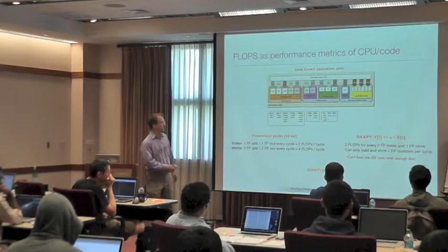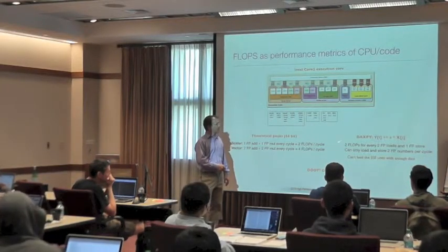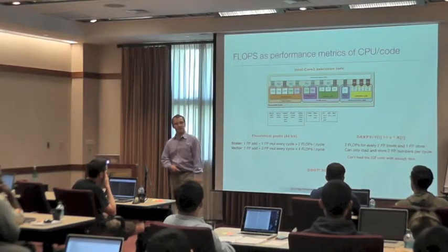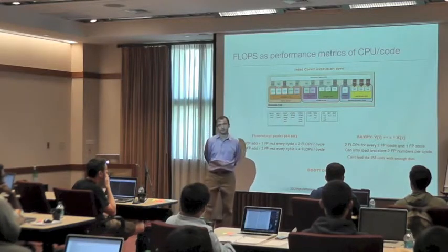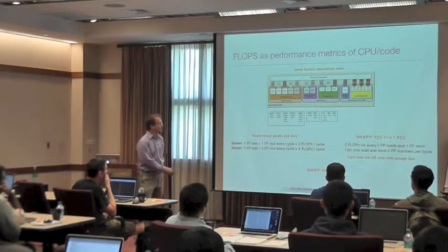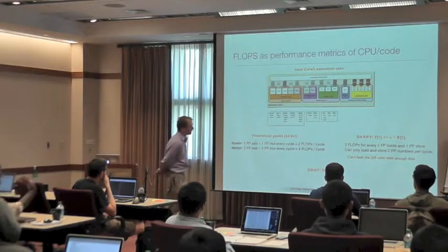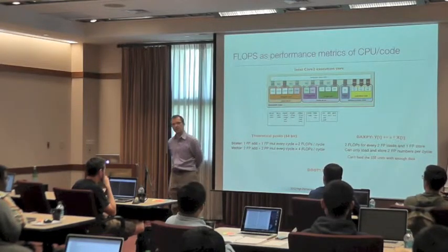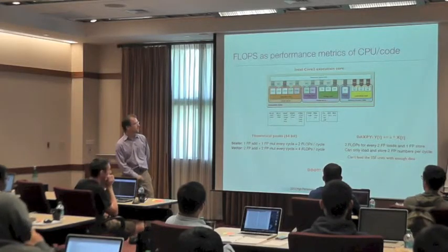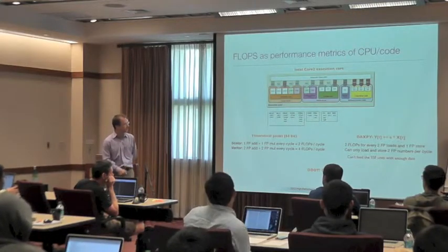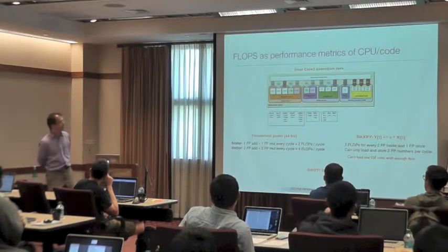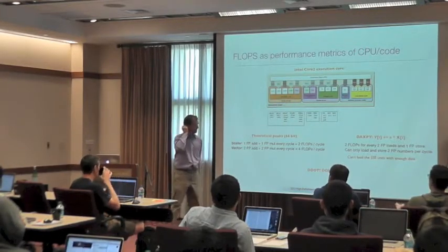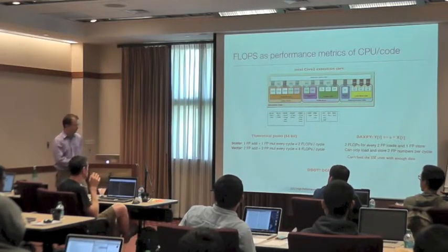Therefore you have three memory operations for every two flops. Now the peak is two flops per cycle, but unfortunately the processor does not allow you to load more than two floating point numbers per cycle. This is a limitation of the processor, so you cannot, in principle, execute the DAXPY loop at 100% efficiency. The best you can achieve is probably something like 66%, maybe 50% of the peak — you simply cannot feed the SIMD units with enough data. This is a type of algorithm that is memory bandwidth bounded.